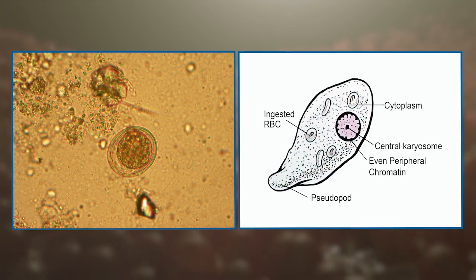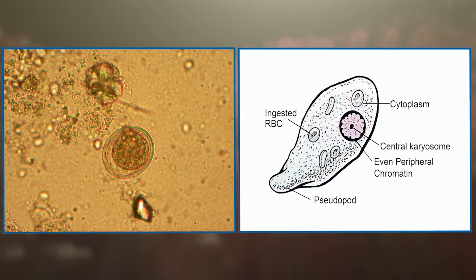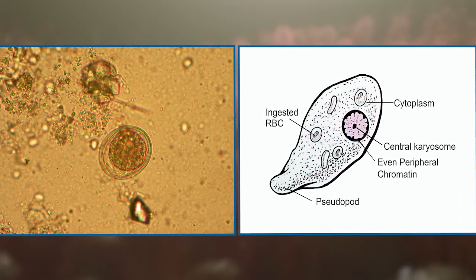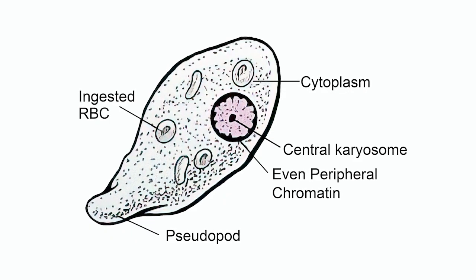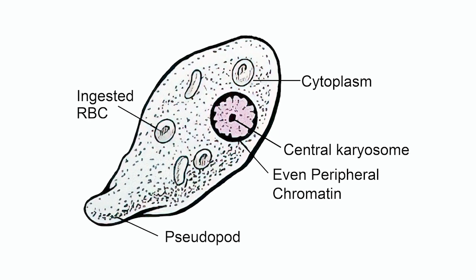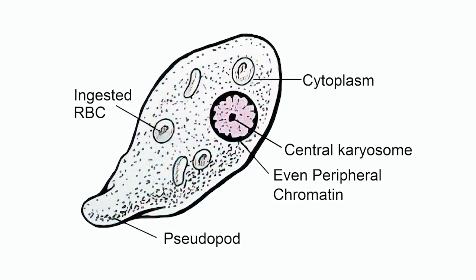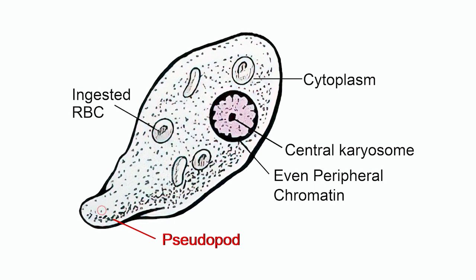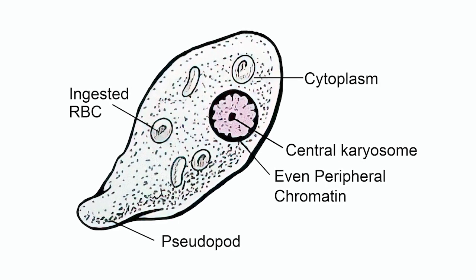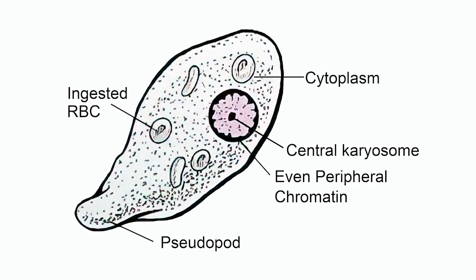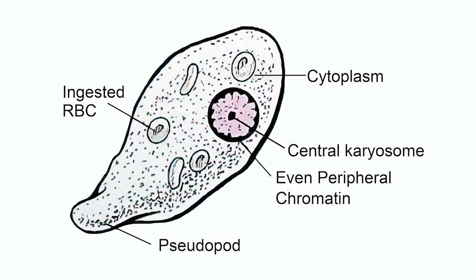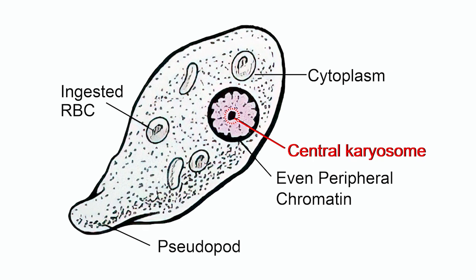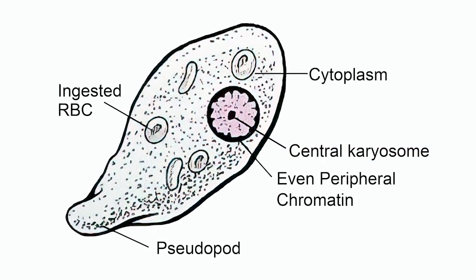What we have observed under the slide is that Entamoeba histolytica is a unicellular organism. It exists in the form of a feeding stage called trophozoite, or in the form of a cyst. The feeding stage is pathogenic. It is irregularly shaped due to the presence of pseudopodia. A single nucleus is present eccentrically in the cell. The nucleus has a peripheral ring of nucleoprotein and a central karyosome; the rest of the space in the nucleus looks empty.